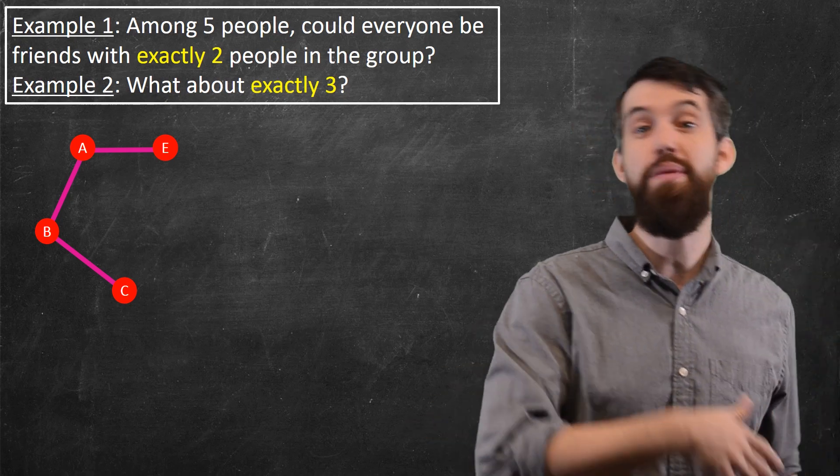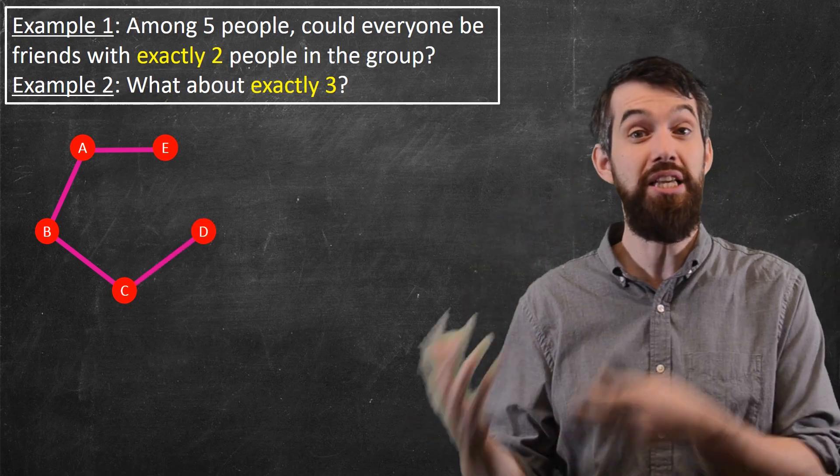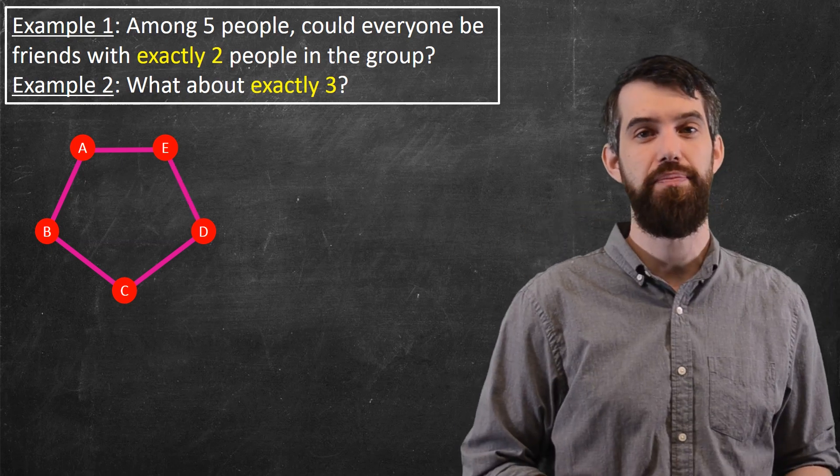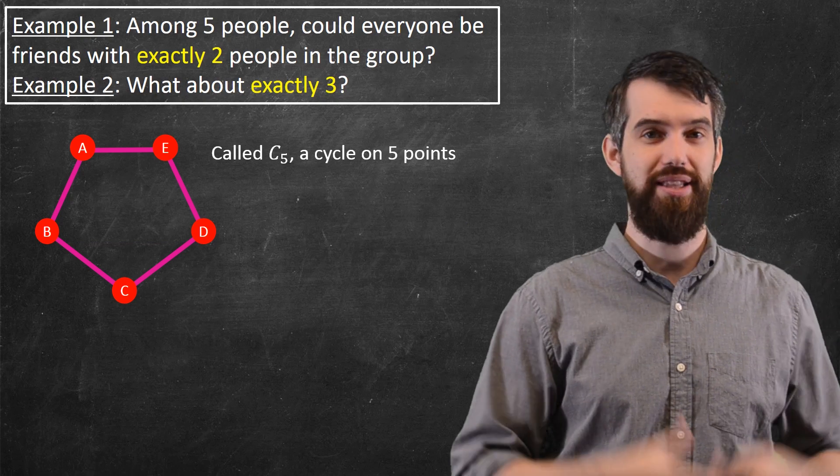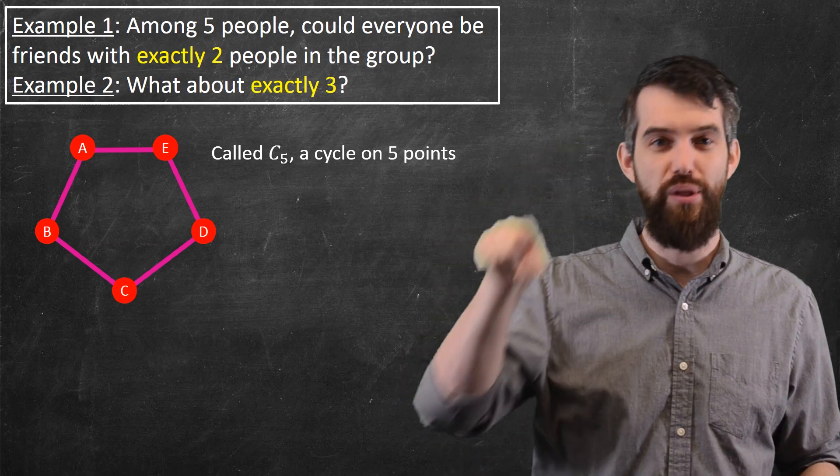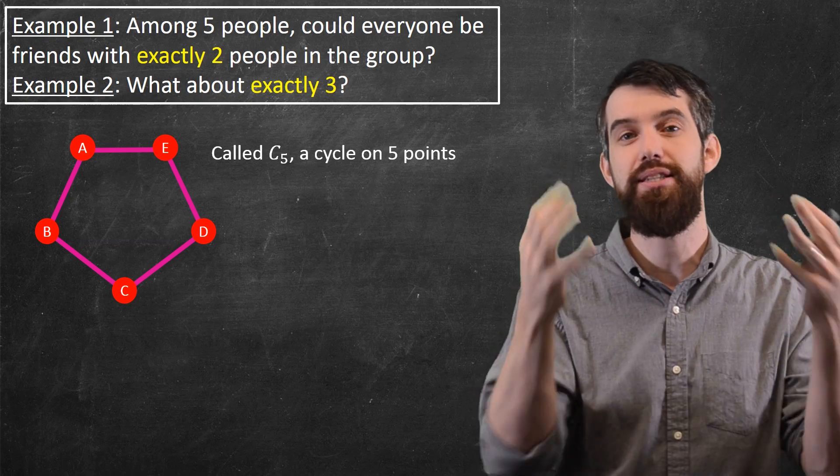C's friends with B and maybe one other. How about D? And then D's friends with C. How about one other? Well, E is the natural choice. This, by the way, is called a cycle. The cycle C5. It's one where you've got sort of a range of them all in a circle, and they're all connected exactly once. That's what a cycle is.